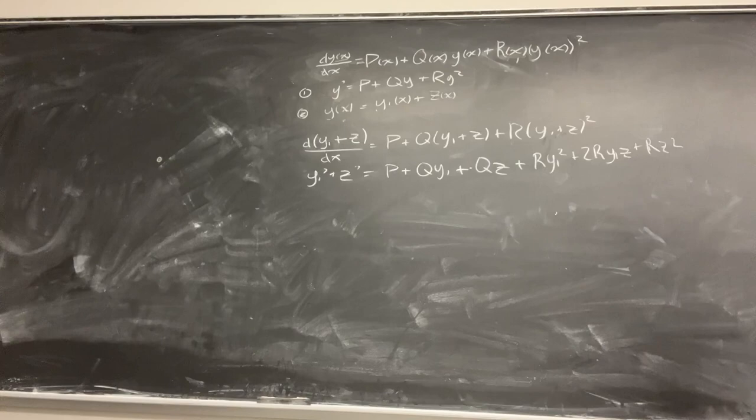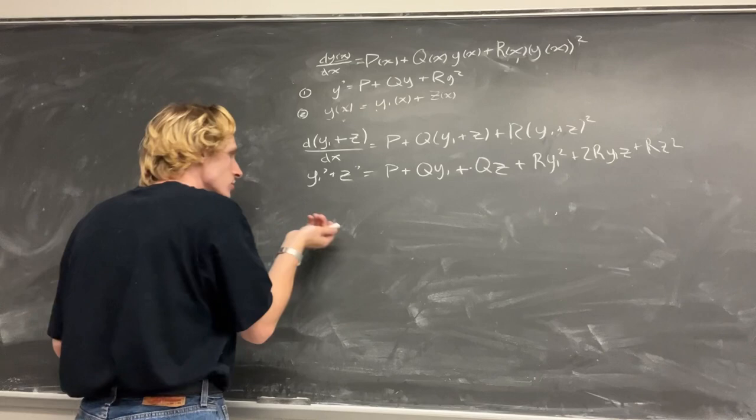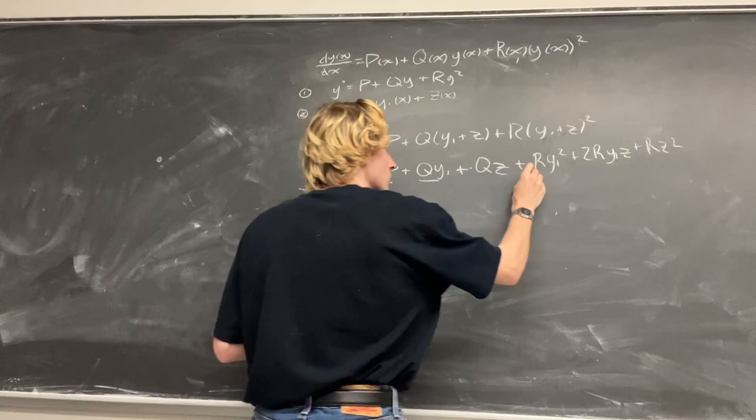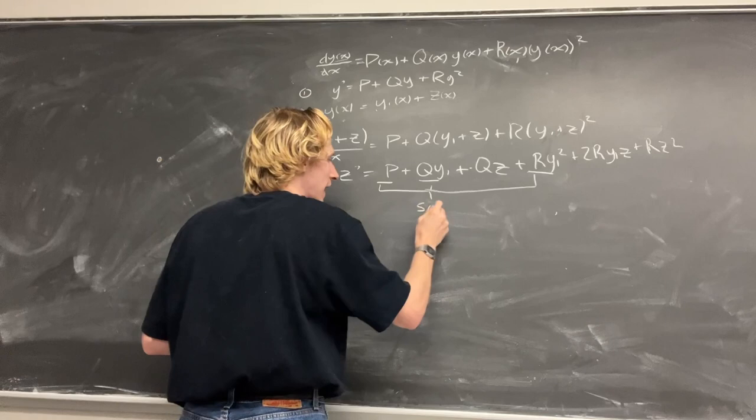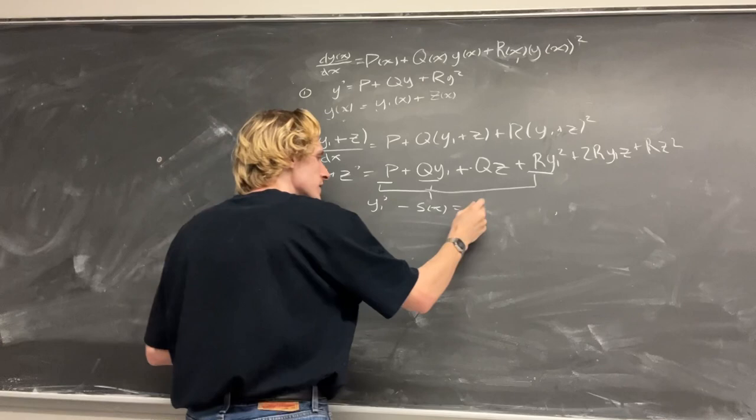While this looks messy, what we can do is actually make a qualitative assumption about our equation, and that's that these four terms here, when added together, make some function, we'll say s(x), such that when we subtract it from our y', we get zero.